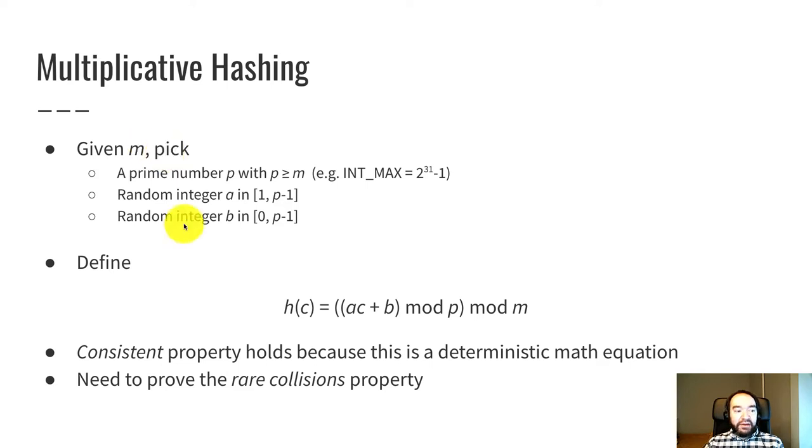First, we need to pick a prime number p. And p has to be greater than or equal to m. In practice, often, p is chosen to be a fixed constant number that's near the maximum value of an int. So a common choice is int max is 2 to the 32nd power minus 1. That's the maximum possible value of a sine 32-bit integer. And that actually happens to be a prime number.